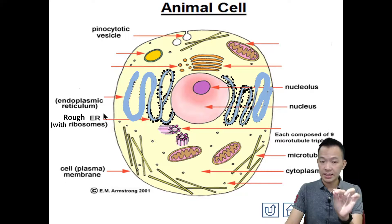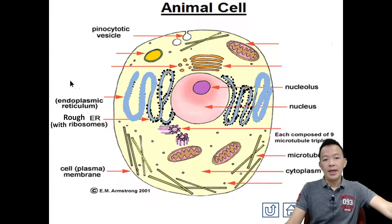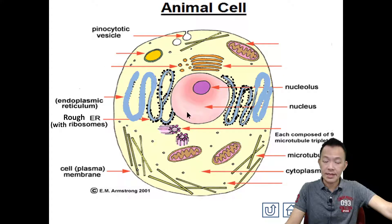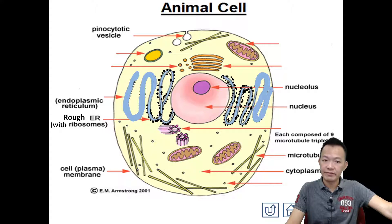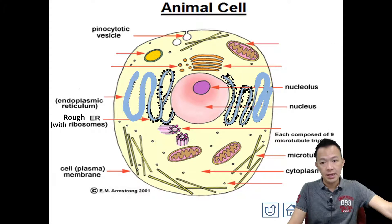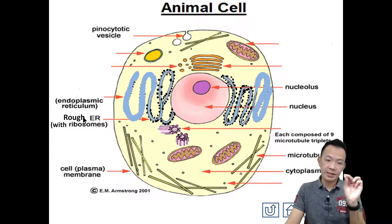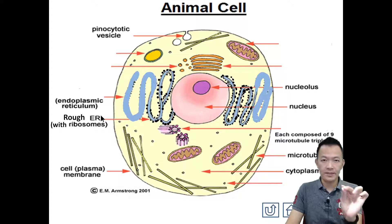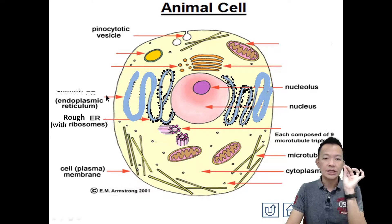For rough endoplasmic reticulum, it has another organelle on its surface, and that organelle is called ribosome. 这种细胞器呢就叫ribosome. So where is the ribosome? The black color dot dot dot - 这些黑色的点点点，一点一点呢就是ribosome. So because of the ribosome, the endoplasmic reticulum becomes rough - 就看起来好像粗粗的感觉.